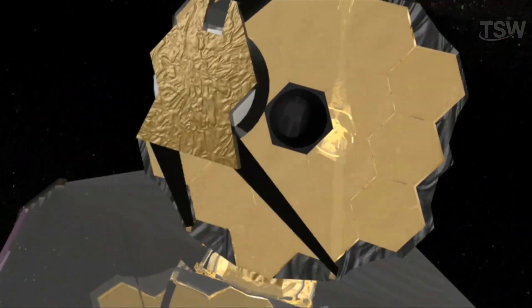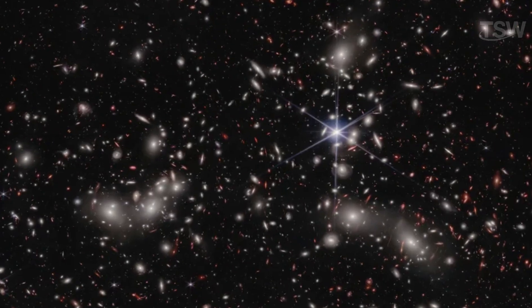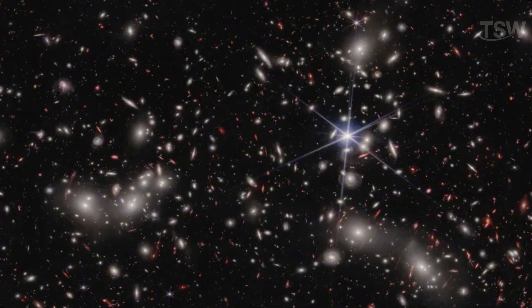The James Webb, for example, has already captured images of extremely distant galaxies whose light was amplified specifically through gravitational lensing caused by clusters of matter in front of them.